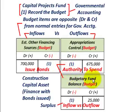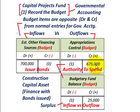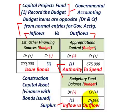We also need to set up a budgetary fund balance to account for the difference between our inflows of $700,000 and our appropriations control credit of $675,000. We need another credit balance in the budgetary fund balance of $25,000. Essentially, we have a surplus — an extra $25,000 in our outflows captured in the budgetary fund balance. That takes care of recording the budget.